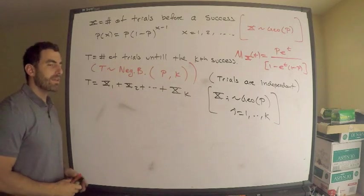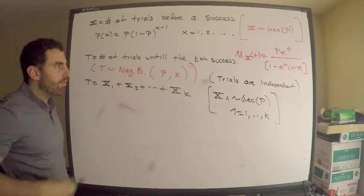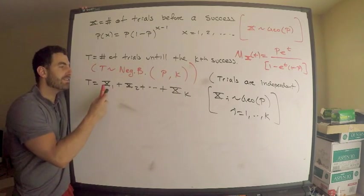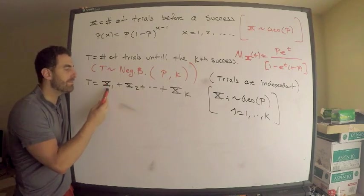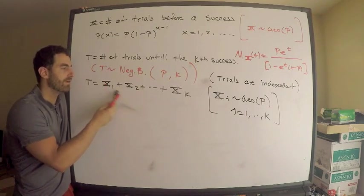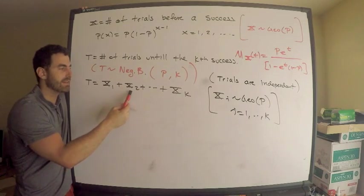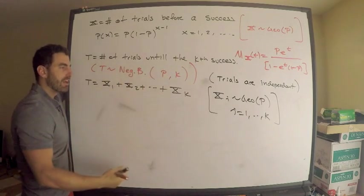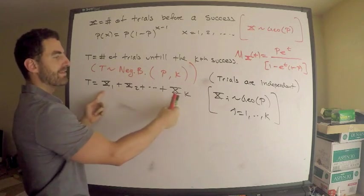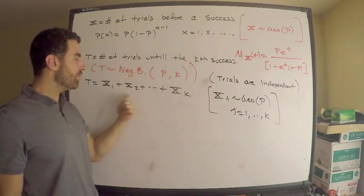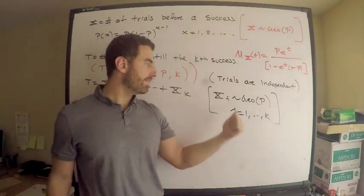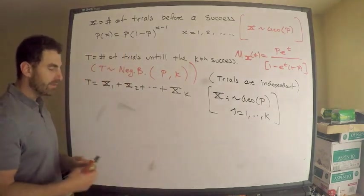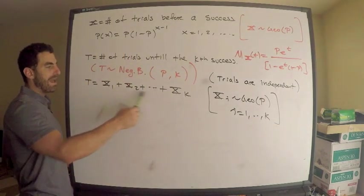Why is that true? The random variable T is the number of trials until the kth success. X1 is a geometric random variable with parameter p — this is the number of trials before the first success. Plus the number of trials before the second success gives the number of trials before two successes, and so on, up to k. So the total gives the number of trials before k successes. Each Xi is identically distributed as a geometric random variable with parameter p.